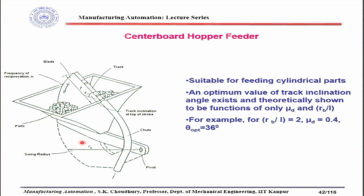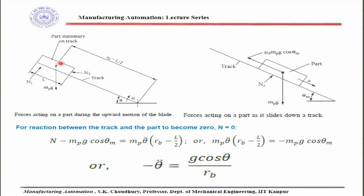Rb is the pivot radius and small L is the length of the track in which the parts will be nested. The maximum number of parts which can be nested will be defined by small l divided by part length capital L. In the diagram, when the part is at the uppermost position of the track, the forces acting are the mass of the part and the normal reaction force. This length from the pivot to the part center will be Rb minus L/2, and theta is the angle of inclination of the track.